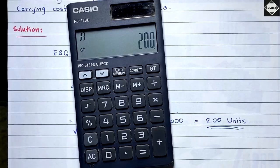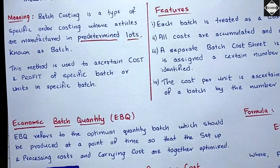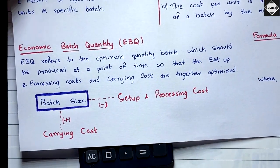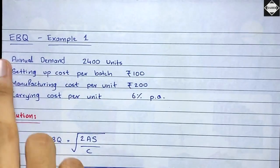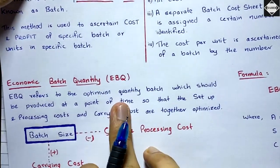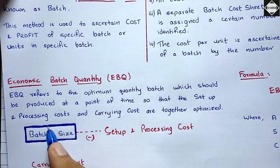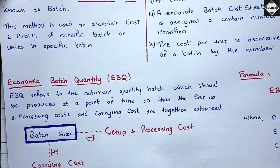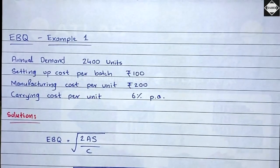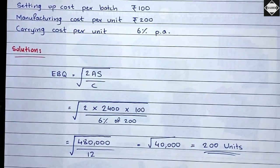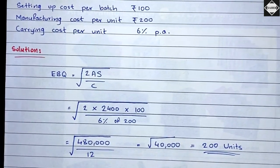The EBQ is 200 units — meaning producing 200 units per batch will optimize and minimize both setup and carrying costs together. That's the best batch quantity, which is why it's called Economic Batch Quantity. In the following videos we'll solve more comprehensive EBQ problems. That's it for this video — see you in the next one!